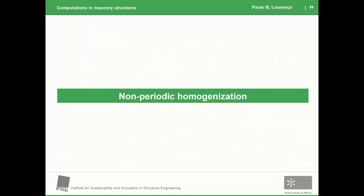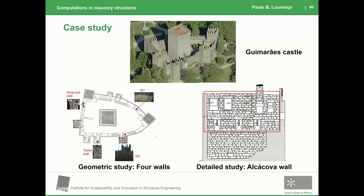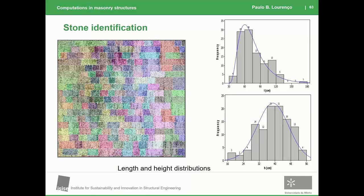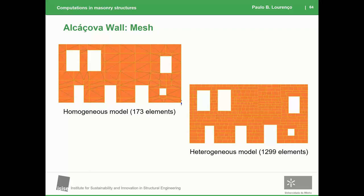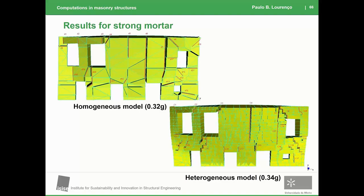These are more applicable to modern buildings where homogenization treats masonry as a periodic structure. We have also been developing non-periodic homogenization. One application is to a castle in my city, where we combine laser scanning and automatic edge detection to capture different stones automatically. I then have a stochastic or statistical representation of the dimensions, which I can put into models. This is a comparison of a heterogeneous model versus a homogeneous model based on a statistical representation — the results are very close, especially after strengthening with stronger mortar, because better bond makes the material more homogeneous.